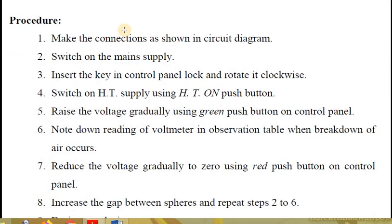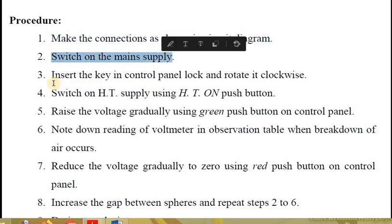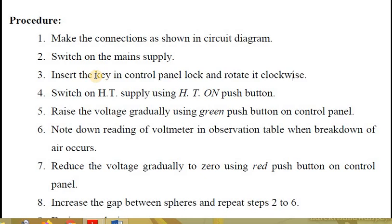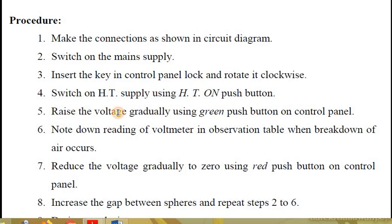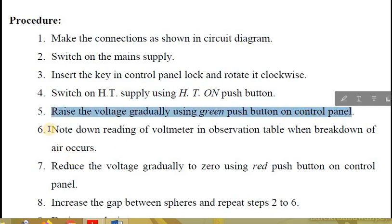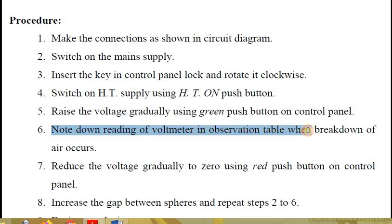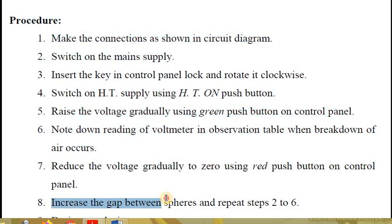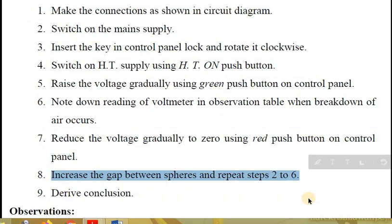The procedure is very simple. Make the connections as shown in the circuit diagram. Switch on the main supply. Insert the key in the control panel and rotate it clockwise, as it is a high voltage equipment — the company has provided a key which must be inserted and rotated clockwise to activate the panel. Switch on the HV supply using the HV on push button. Raise the voltage gradually using the green push button on the control panel, and note down the reading of the voltmeter in the observation table when breakdown of the air occurs. Reduce the voltage gradually to zero using the red push button on the control panel.